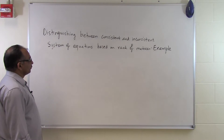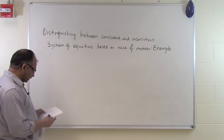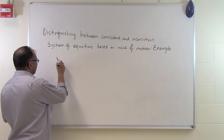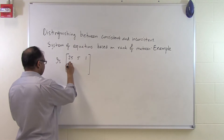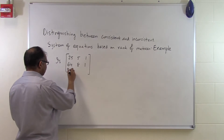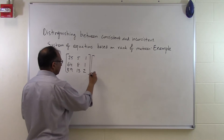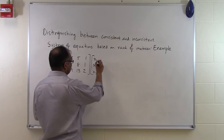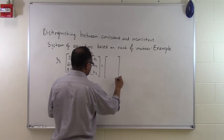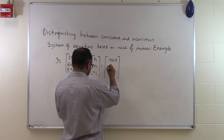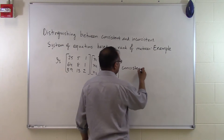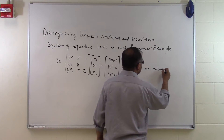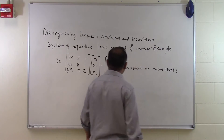In this segment, we'll talk about, through an example, whether we can distinguish if a system of equations is consistent or inconsistent. Let's pose the problem. This is the problem statement: is this particular set of equations consistent or inconsistent? So that's what we have to figure out.